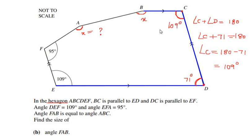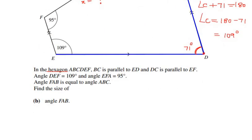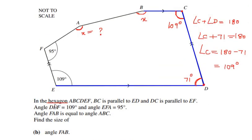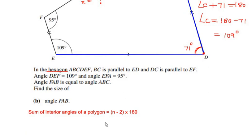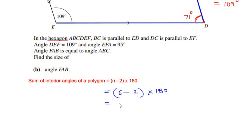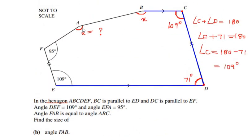Now we can use the sum of interior angles of this hexagon. The formula is: sum of interior angles equals (n minus 2) times 180, where n is the number of sides. Since it is a hexagon, n equals 6. So we get 6 minus 2 times 180, which is 4 times 180, equal to 720 degrees.